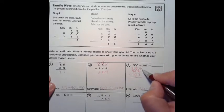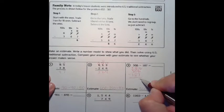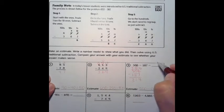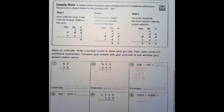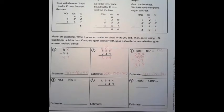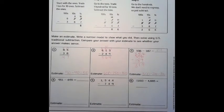16 ones take away 7 is 9, 9 take away 8 is 1, 4 take away 1 is 3. Our answer is 319. Now I'm going to have you do 4, 5, and 6 on your own. See how you do with that. Make sure that you're doing your trading if you need to.